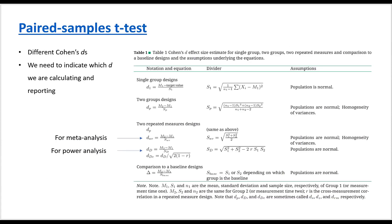Things become slightly more complicated for paired samples t-test because we have different Cohen's d's. We have Cohen's d_AV (also called Cohen's d_S) and Cohen's d_D (also called d_Z). Cohen's d_AV is normally used for meta-analysis, and Cohen's d_Z is normally used for power analysis. So we typically calculate Cohen's d_Z for a paired samples or dependent samples t-test. The difference between these two is that Cohen's d_Z takes into account the correlation between the repeated measures.